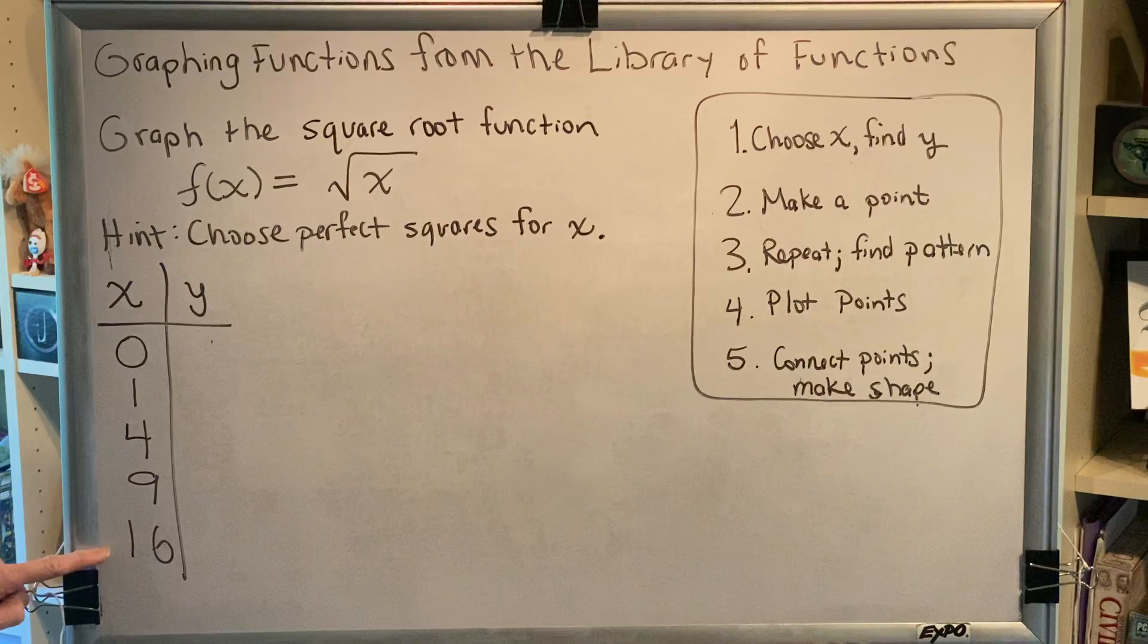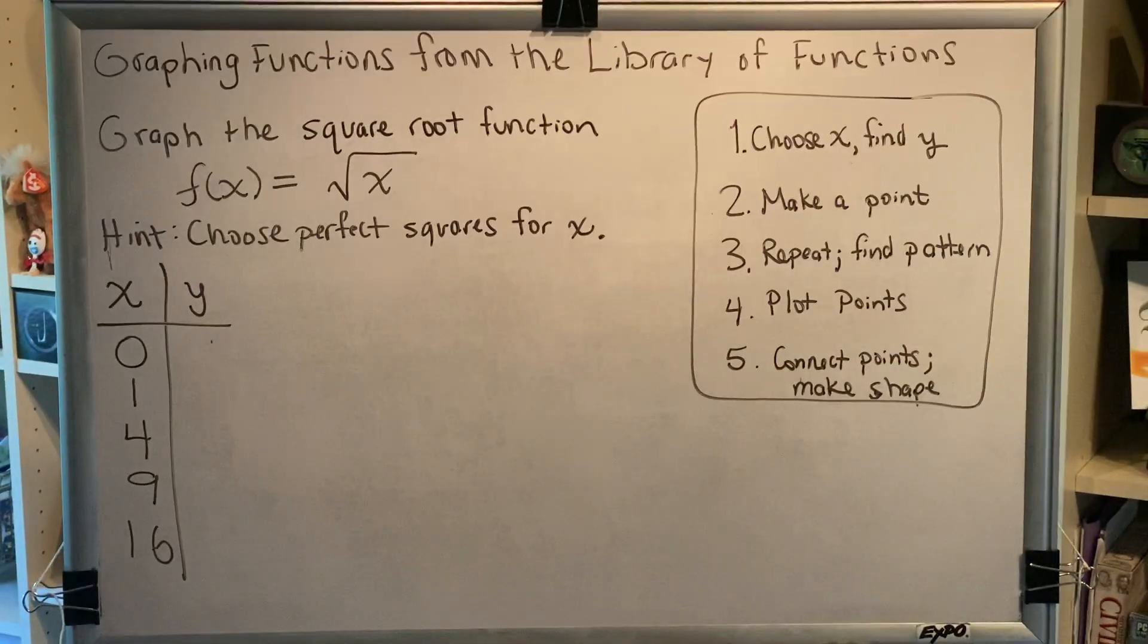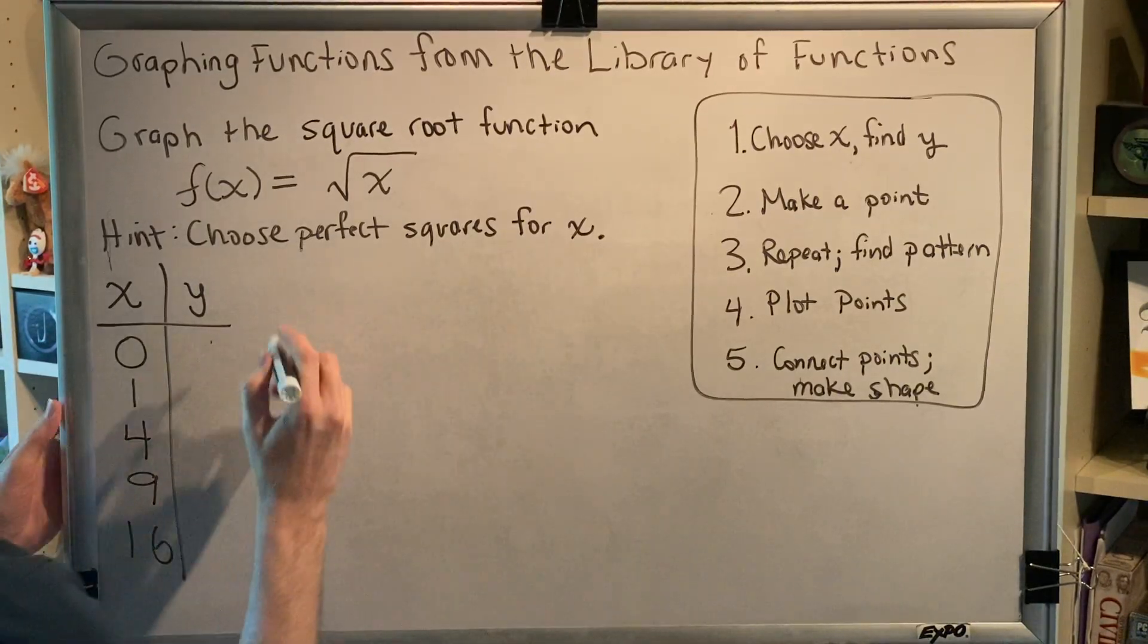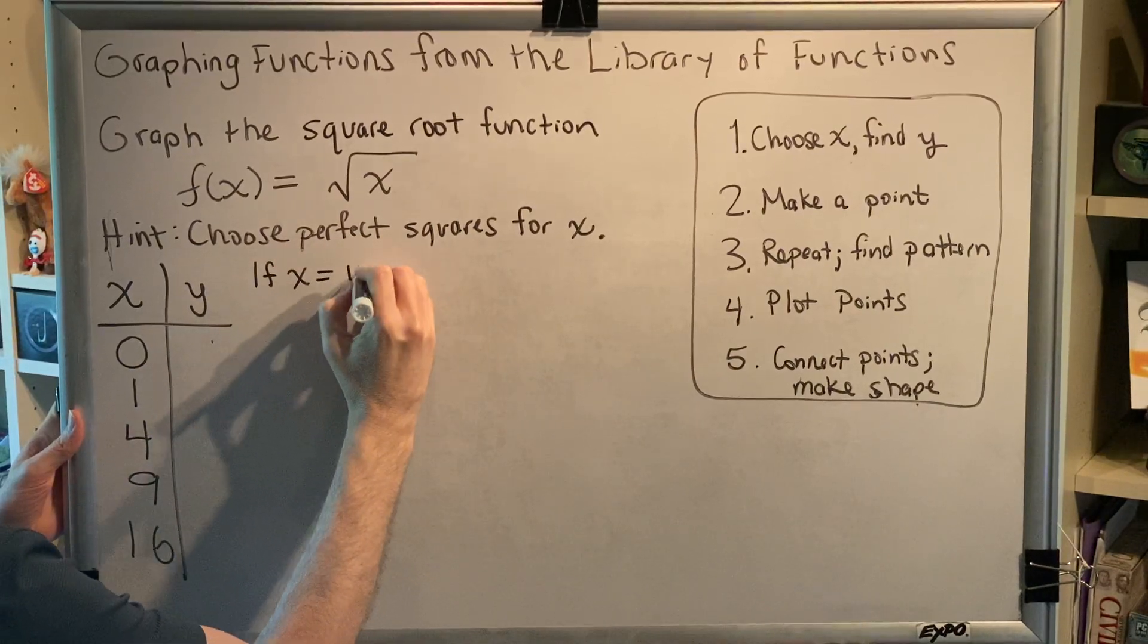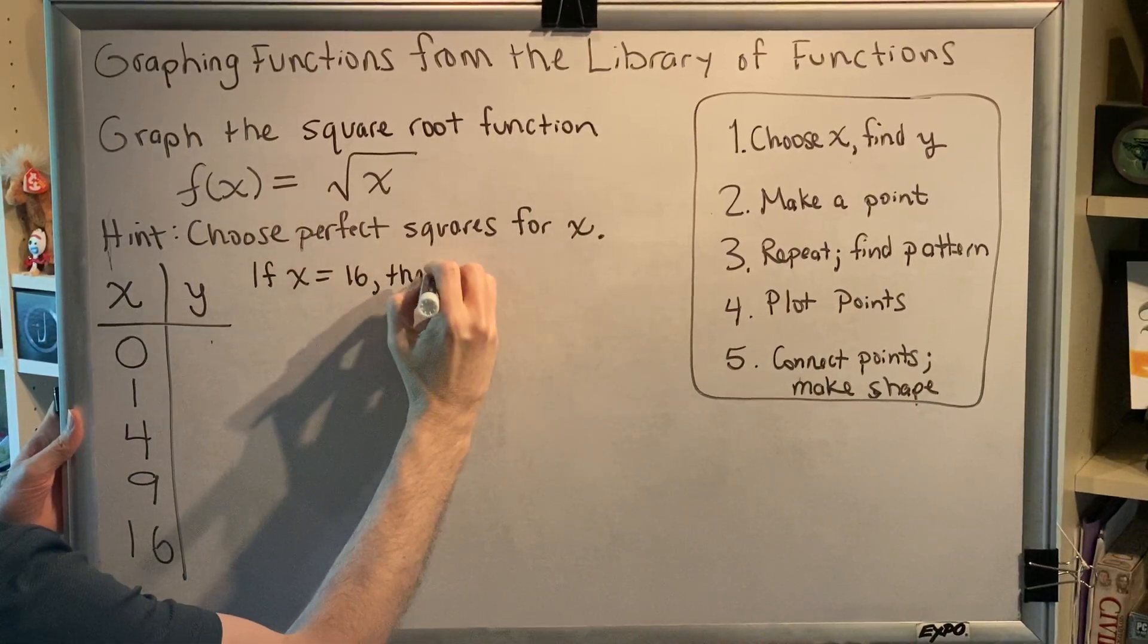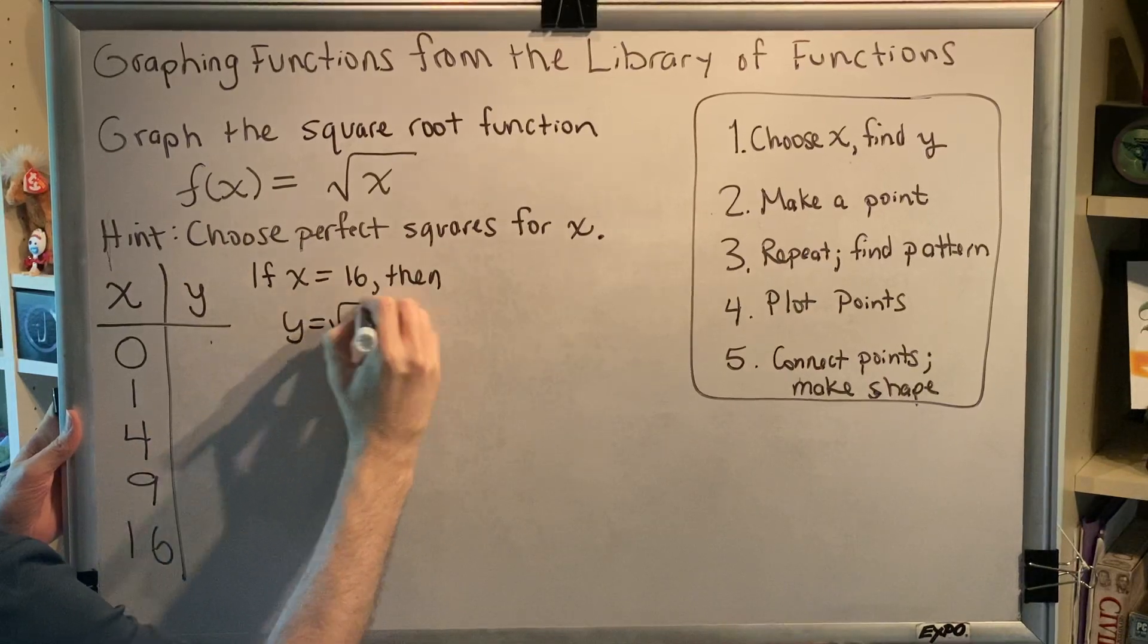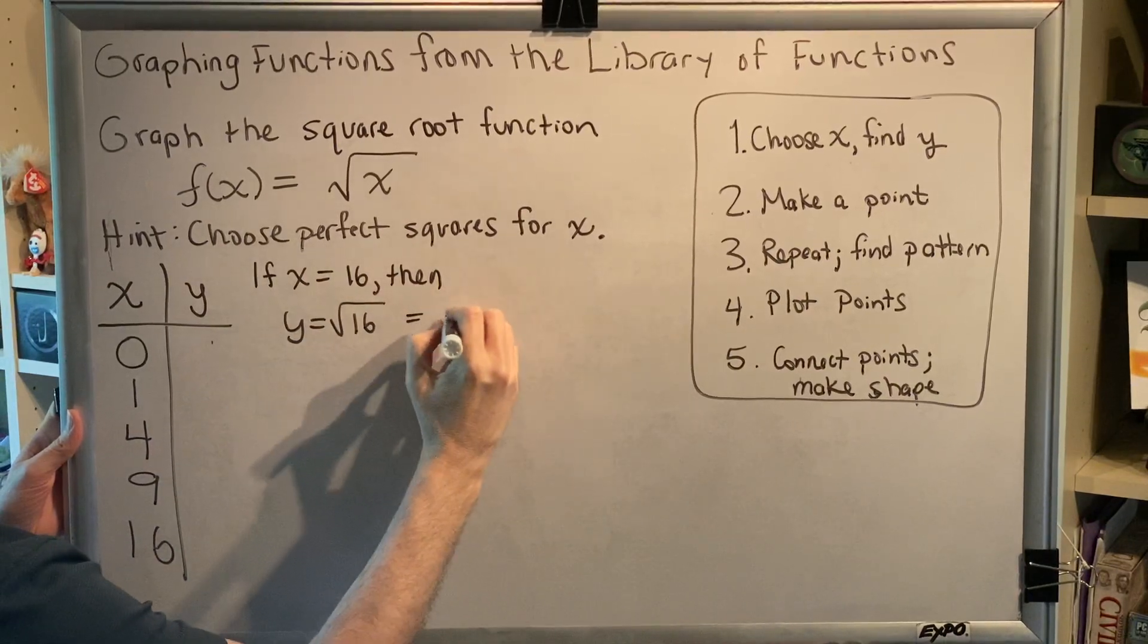Okay, so now that we've chosen appropriate values for x, we'll plug in to find the values for y. For example, if x is equal to 16, then y is equal to the square root of 16, which is 4.